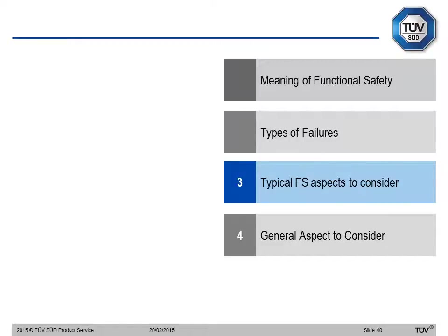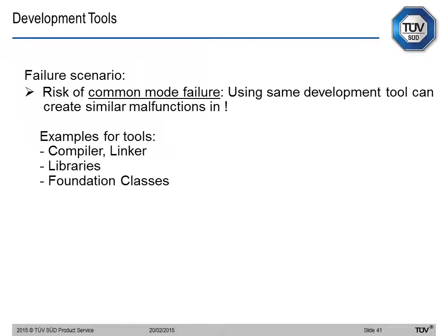That was a brief introduction on how to look for failures and apply functional safety. Now let's look at some general and specific aspects to consider. The first is development tools. When you write software you use compilers and libraries. The risk is a common mode failure — if you use the same compiler for everything in the software and this compiler has an error, everything else goes wrong. To mitigate this, you may need to use different libraries and different compilers, or test the same compiler with a self-test system.